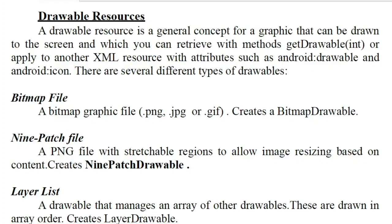Image components include different types of bitmap files — bitmap graphic files with PNG, JPG, and GIF extensions. If you want to include the image components,